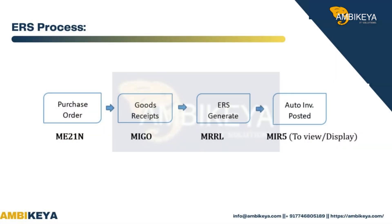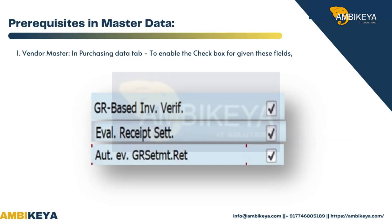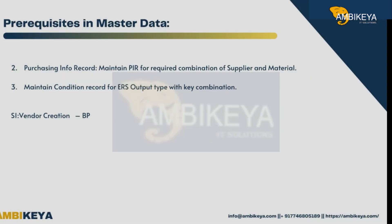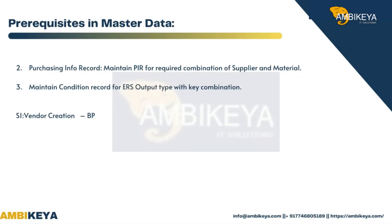ERS Process — Prerequisites in Master Data. In the Vendor Master, go to the Purchasing Data tab to enable the required checkboxes. Maintain a Purchasing Info Record for the required combination of supplier and material. Also maintain a Condition Record for ERS Output Type with Key Combination S1.